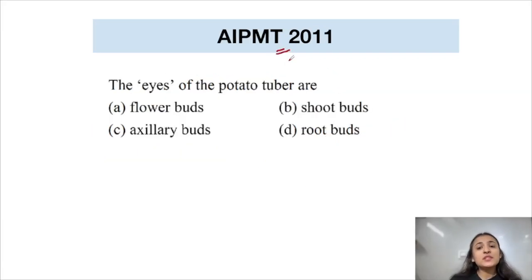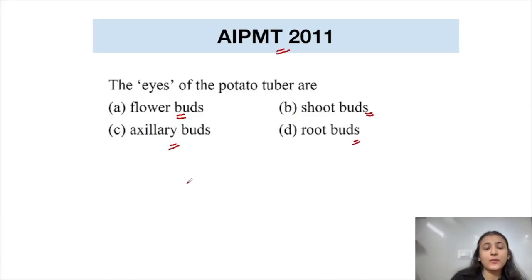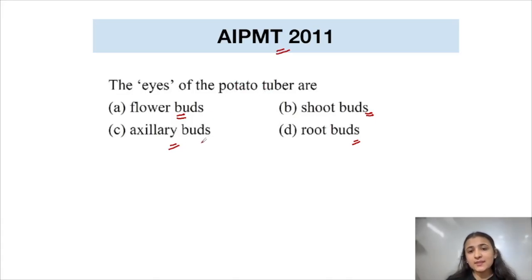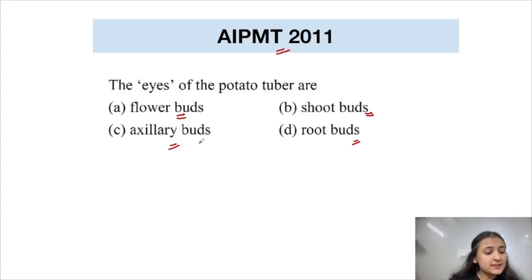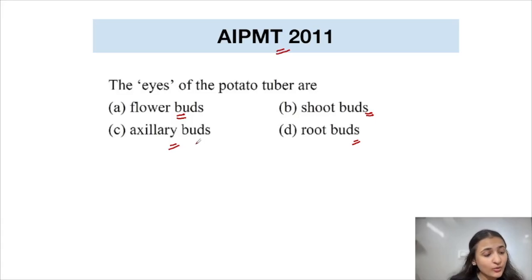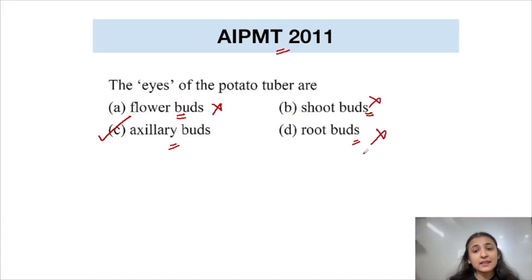From AIPMT 2011: The eyes of the potato tuber are flower buds, axillary buds, shoot buds, or root buds? The eyes of the potato tuber are axillary buds. The potato tuber has depressions known as eyes, equivalent to nodes, and each eye comprises 1 to 3 axillary buds present in the axil of the leaves. The correct answer is option C, axillary buds.